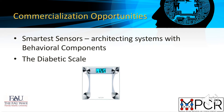In the future, with smarter sensors, we can make all kinds of products — potentially like this diabetic scale, which uses a Raspberry Pi and a Movidius to take an image of the feet of a diabetic patient while they are weighing themselves.